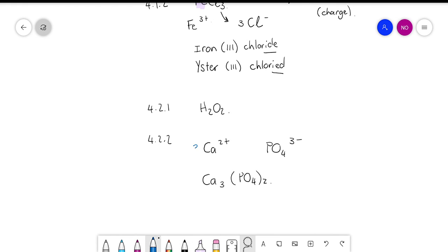We need three of these and two of those to get to six to balance. But because this one is polyatomic, it means that you have to put a bracket and the two on the outside. So you can see here on the outside.